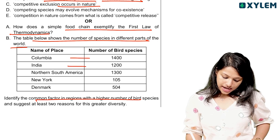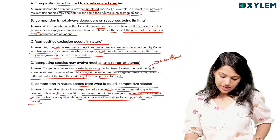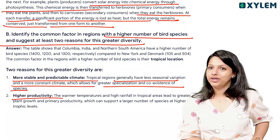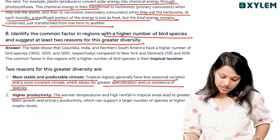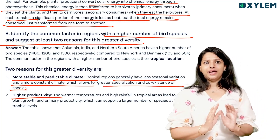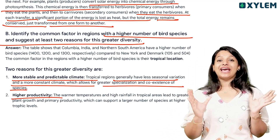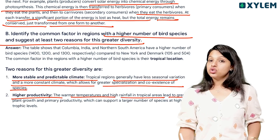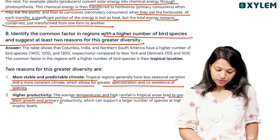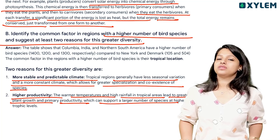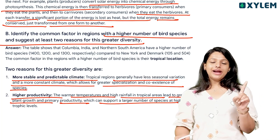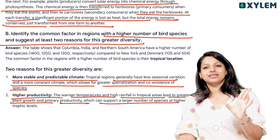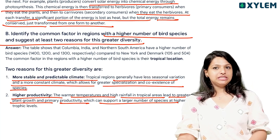Regions like Colombia and India carry high diversity because of more stable and predictable climate. Warmer temperatures, high rainfall, and tropical conditions lead to greater plant growth and primary productivity, supporting a large number of species at higher trophic levels. Because of more stable climate and higher productivity, these regions have greater species diversity.